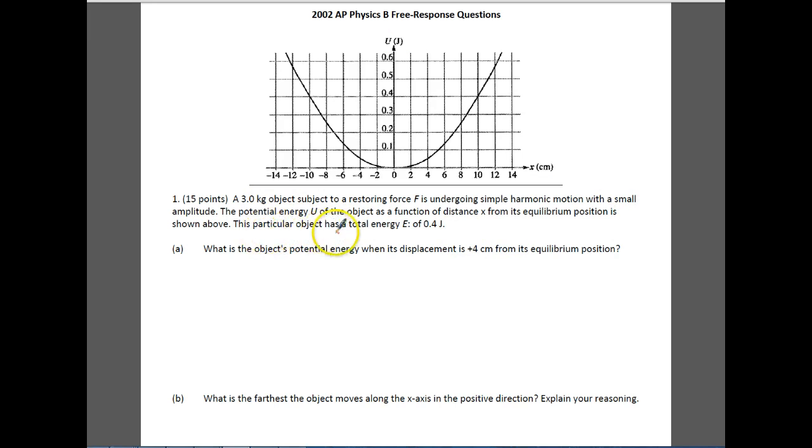It says that the particular object has a total energy of 0.4 joules. That means that the total energy, if it's equal to 0.4, it cannot be any bigger than that. So this is the maximum potential energy or kinetic energy it could have, or the sum of the two together would have to be 0.4. So no more than that.